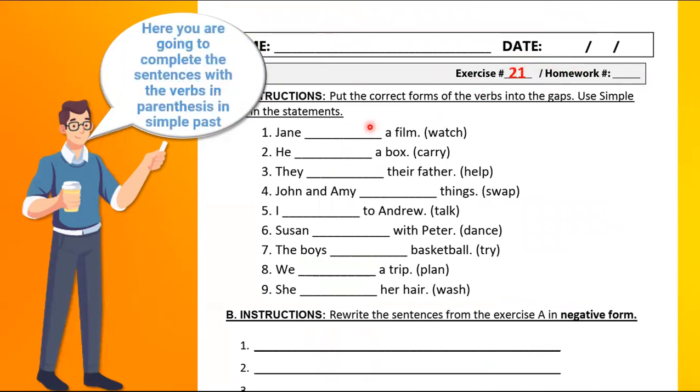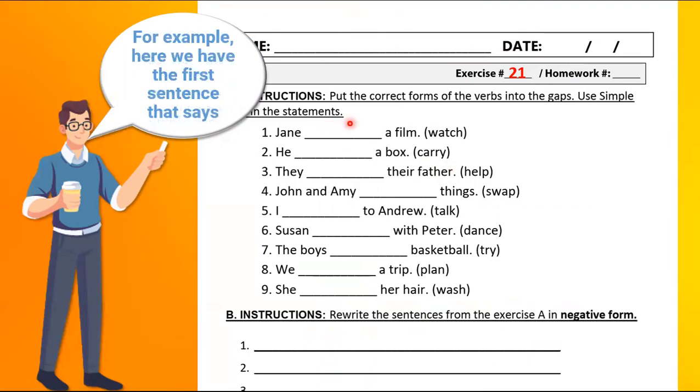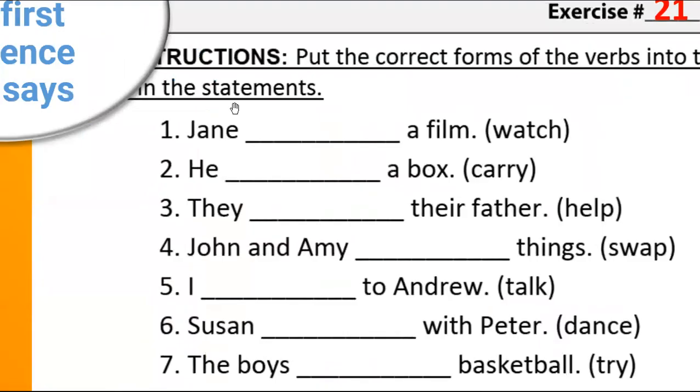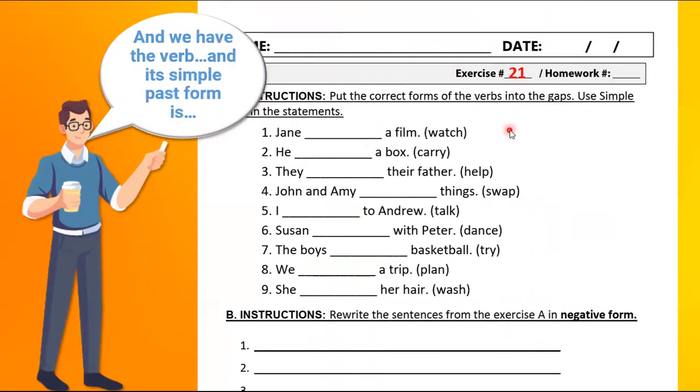Here you're going to complete the sentences with the verbs in parentheses in simple past. For example, here we have the first sentence that says Jane, a film, and we have the verb watch.